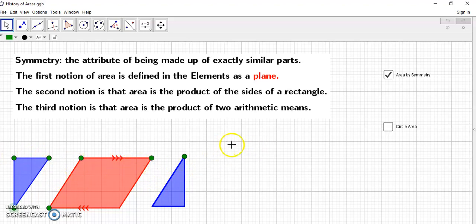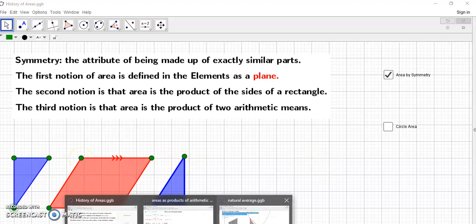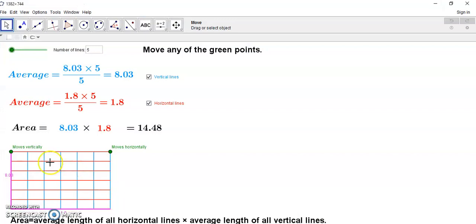So really the second notion is that area is understood by symmetry and naturally the products of the rectangle, so you can have a rectangle and the sides are the product of the sides or the area.